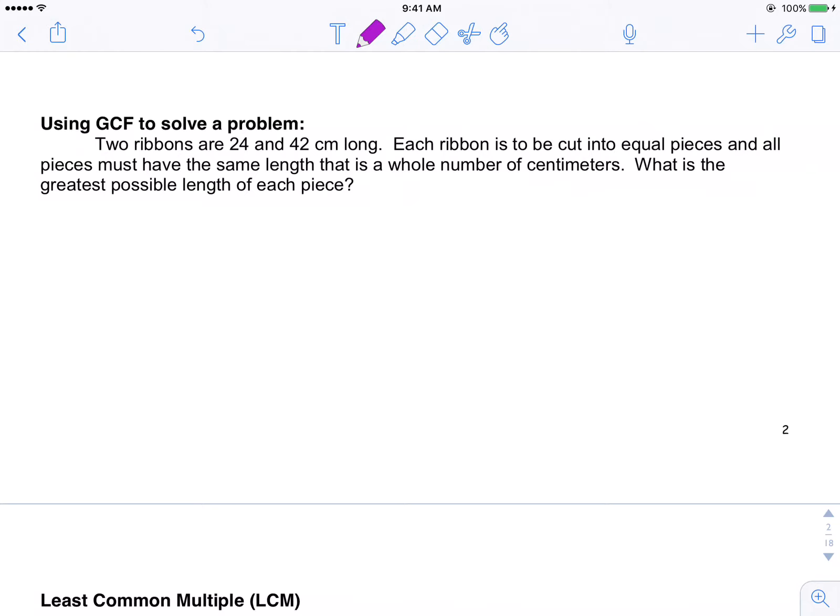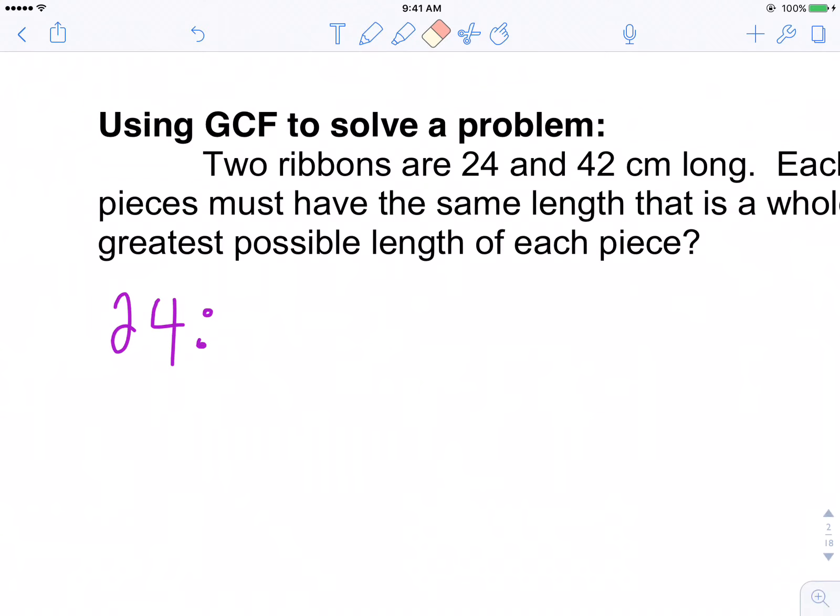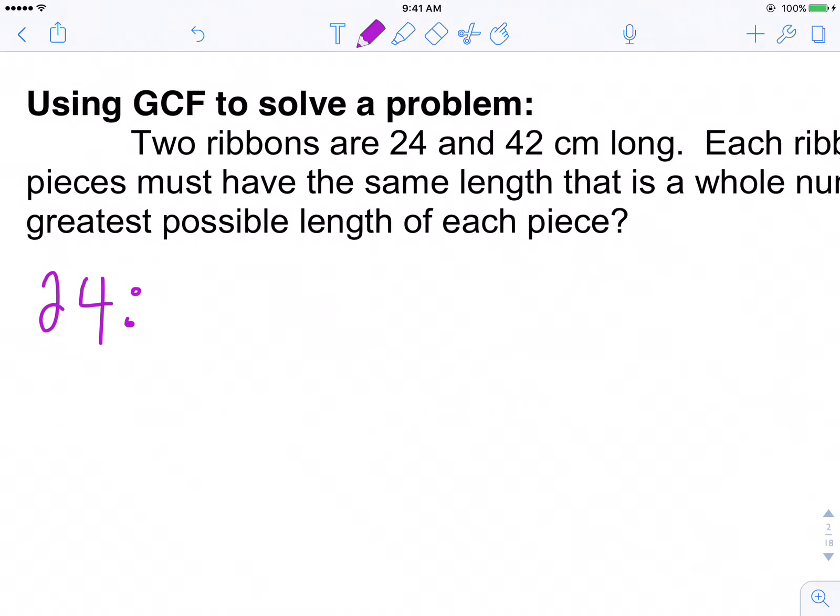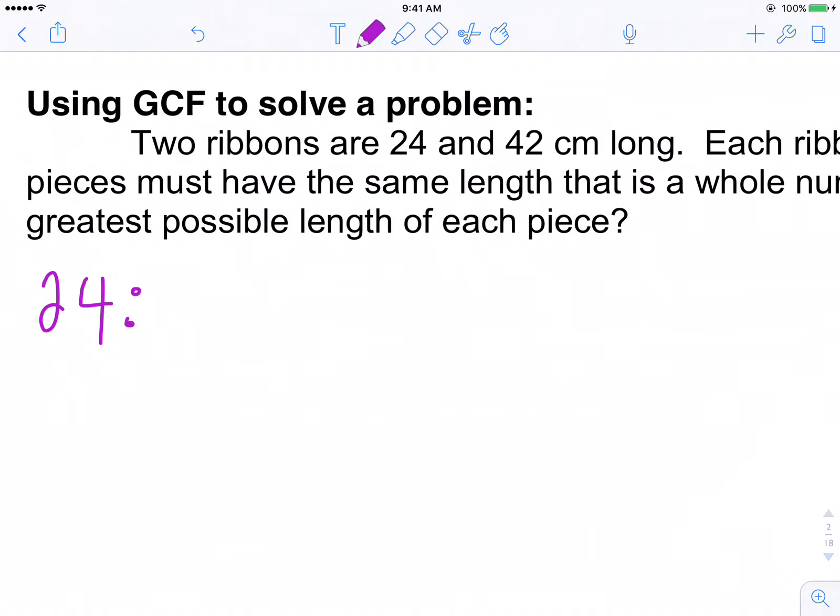So here, with these types of questions, the idea is being able to recognize whether you need to find greatest common factor or least common multiple, which we'll look at in the next section. So here, we're looking for greatest common factor. In this case, the greatest common factor between 24 and 42.